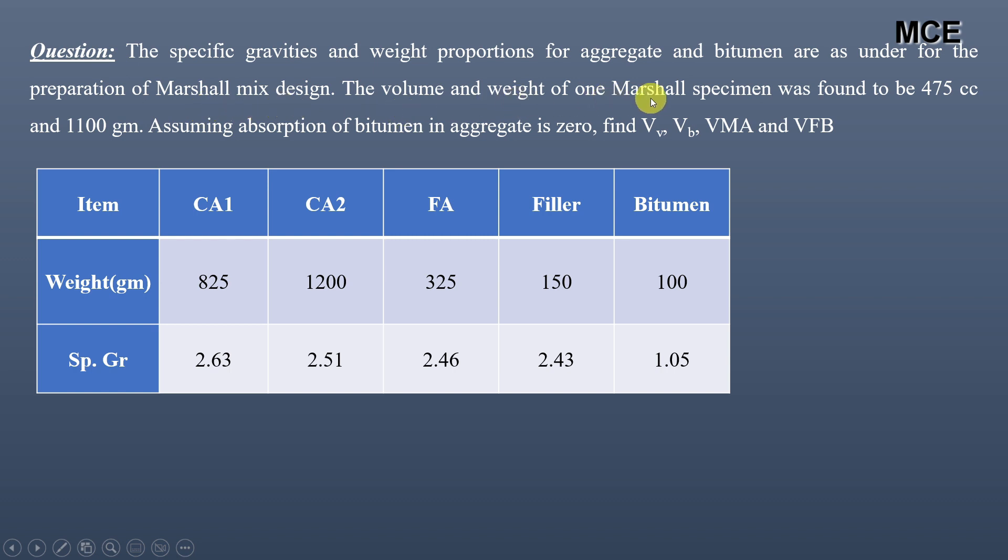The volume and weight of one Marshall specimen was found to be 475 cm³ and 1100 g respectively. Assuming absorption of bitumen in aggregate is 0, we have to find the volume of voids, volume of bitumen, voids in mineral aggregates, and voids filled with bitumen.